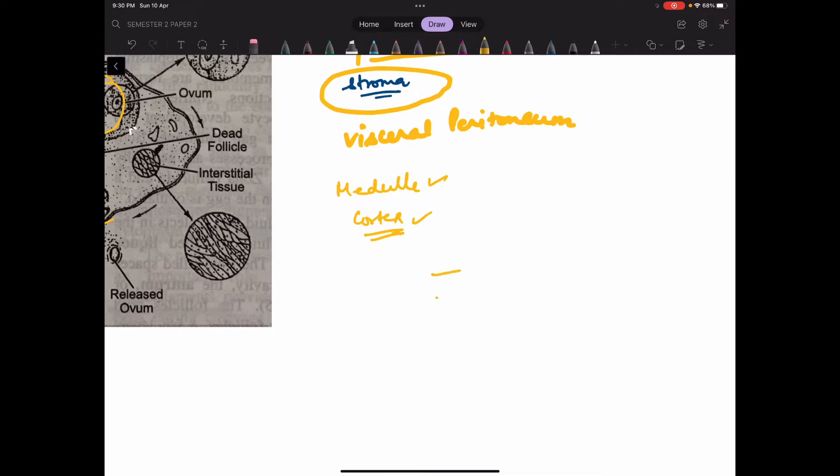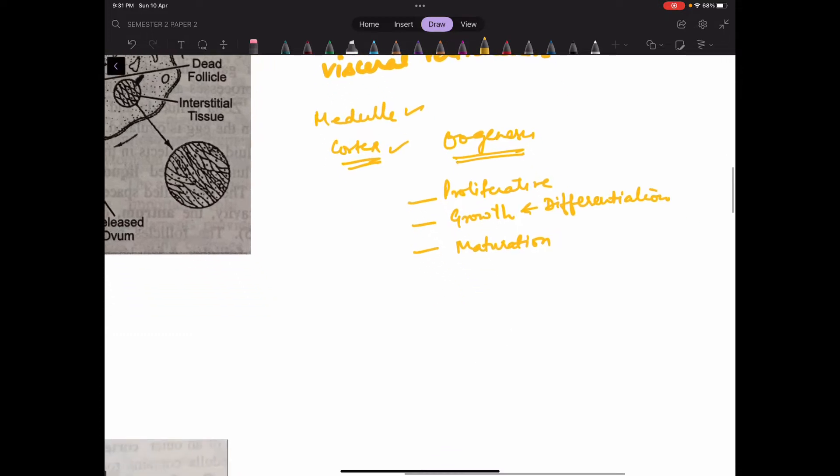Oogenesis comprises of three stages. Just like spermatogenesis had three stages - first stage was proliferative phase, next stage was growth stage, and third stage was maturation stage. Same way, oogenesis also has these three stages, except that in the second stage we call it growth and differentiation.